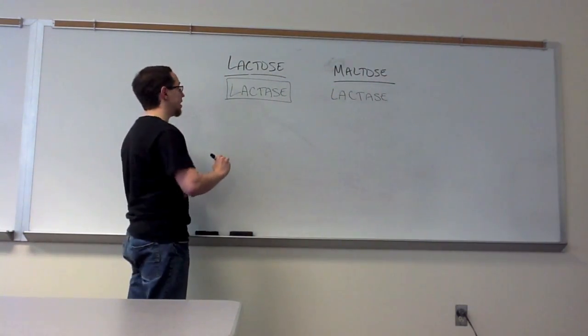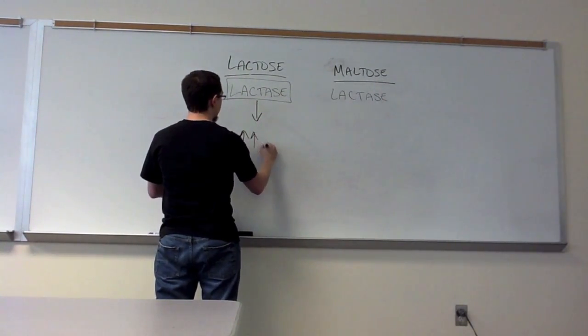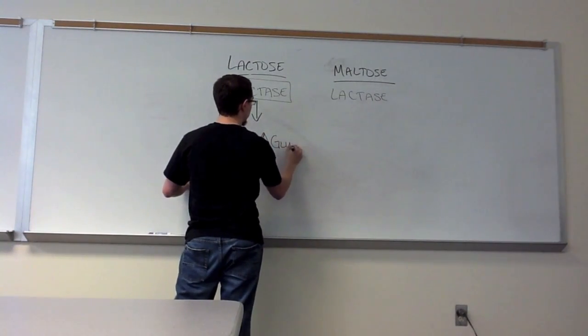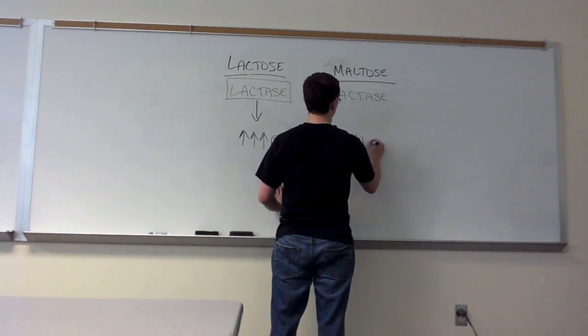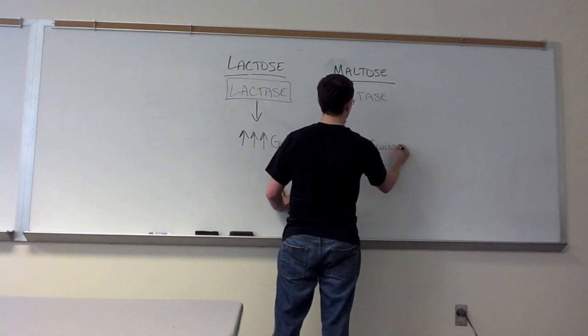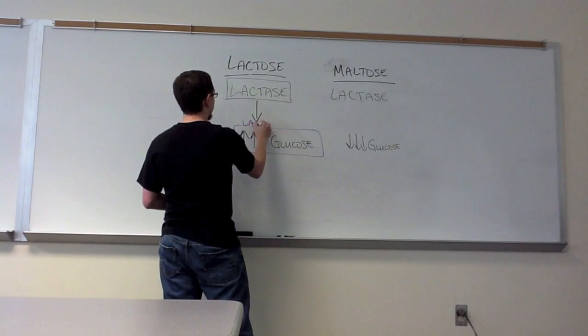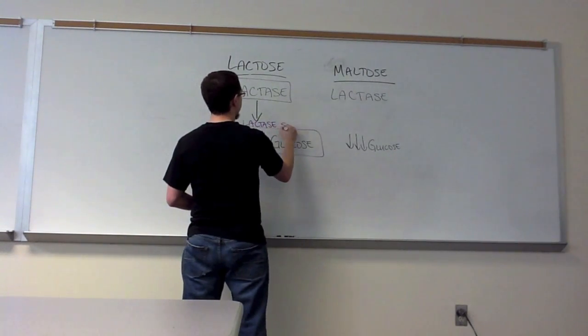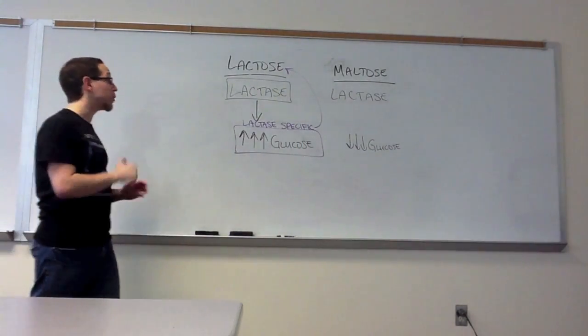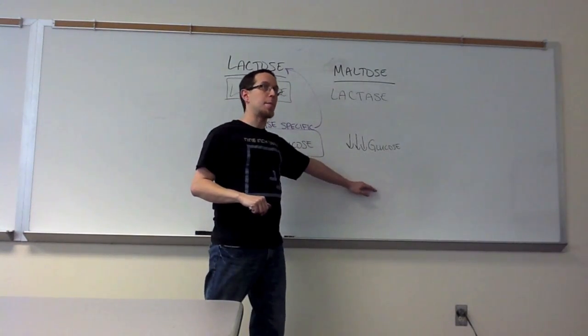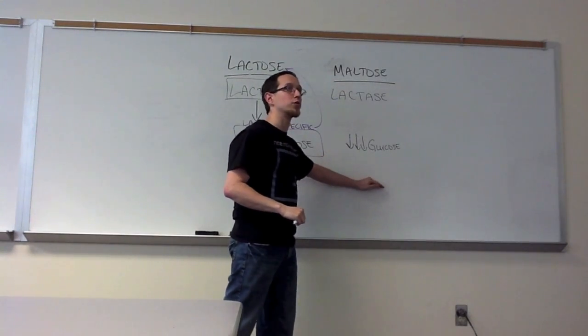So what we expect to see in this exercise, if lactase is specific for lactose, is we expect to see very, very high levels of glucose in our lactose tubes and not so high levels of glucose in our maltose tubes. And that's indeed what we saw, which tells us, at least suggests and supports the hypothesis, that lactase is specific for lactose. Had we seen an equal amount of glucose in both tubes, we could not come to this conclusion.